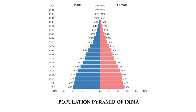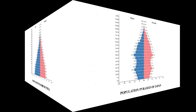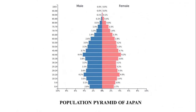The population pyramid of Japan is narrow at the base, which shows a low birth rate. The death rate is also low in such countries. Thus, more people are able to reach old age.